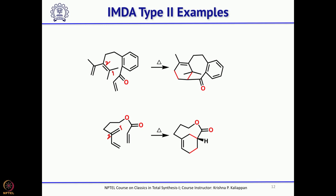Now what you have to look at is the ring size formed as a result of the IMDA type 2 reaction. Obviously one ring will be 6-membered from the 4+2 cycloaddition, but you should calculate the size of the other ring. Counting the atoms: 1, 2, 3, 4, 5, 6, 7, 8 — an 8-membered ring is formed here. As stated, a minimum 7-membered ring must be formed for IMDA type 2 to be possible, and normally 8-membered rings can be successfully made using IMDA type 2.